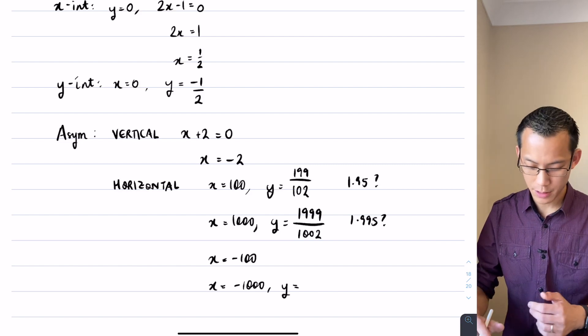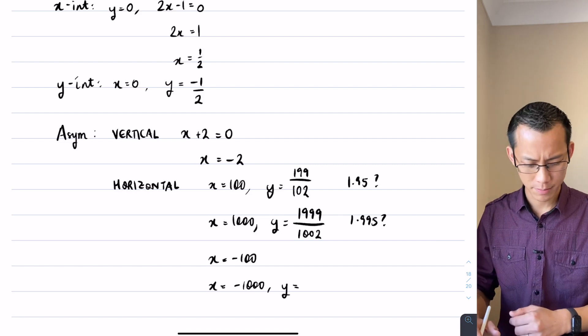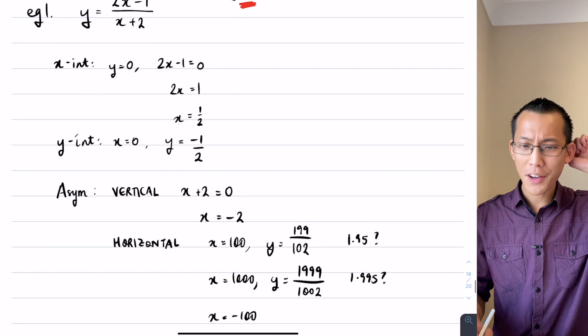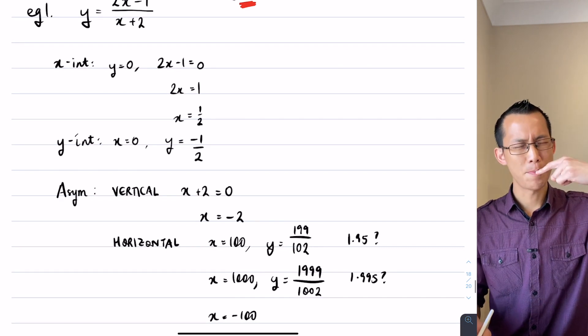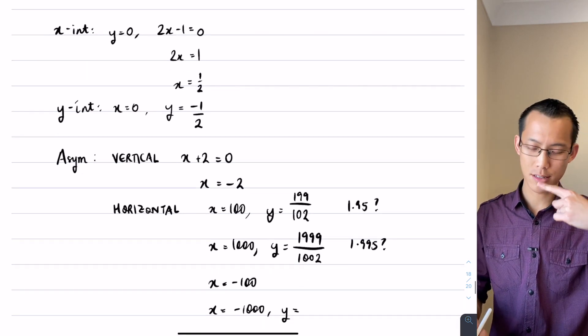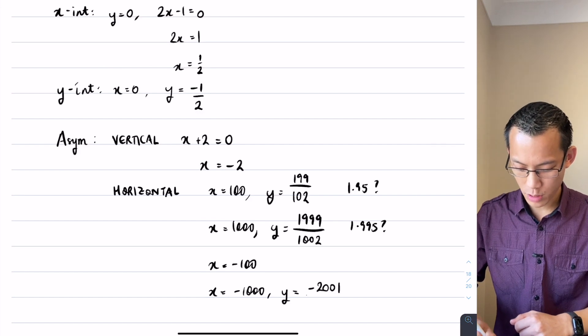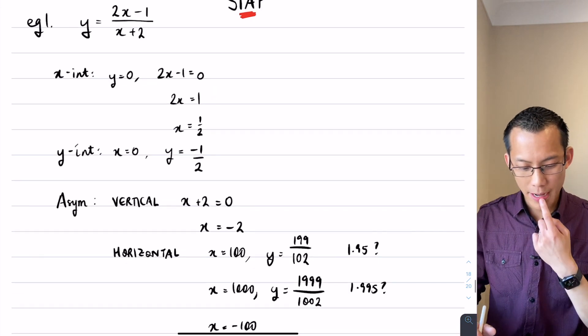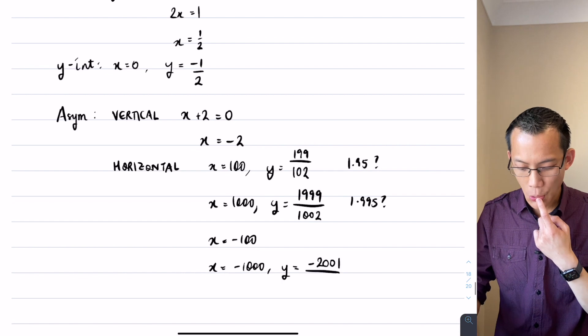Got both things wrong there. When I go ahead and do the substitution, negative 1000, so this is negative 2000 minus 1, so negative 2001, and then on the denominator what am I getting? Negative 1000 plus 2. This is negative 998, right?